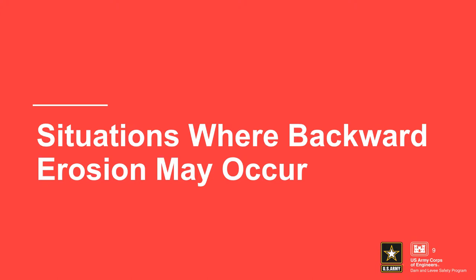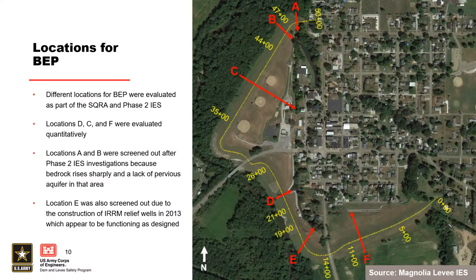Geologic and geomorphic considerations were previously discussed in this training course, but the next slides reinforce their importance for backward erosion piping. During a risk assessment, multiple failure pathways will be identified and may need to be evaluated. This slide provides examples of multiple locations for backward erosion piping considered for Magnolia levee. Some pathways were screened, some assessed semi-quantitatively, and some required quantitative assessment. Finding the weak link in the foundation based on geomorphology, previous levee performance, and other factors is critical.